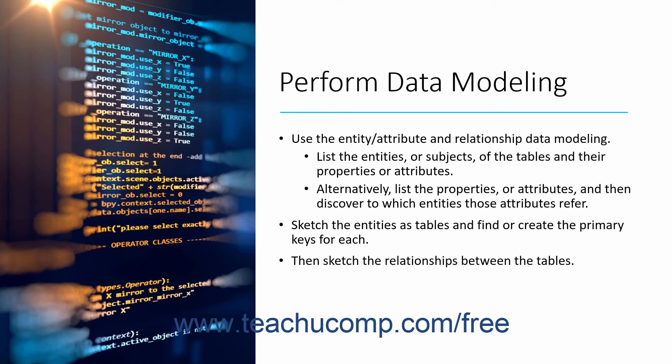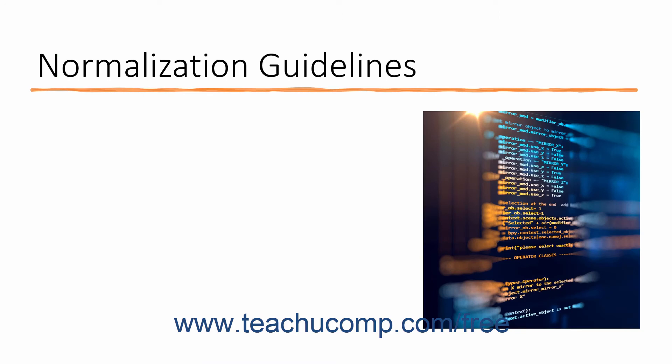Sketch relationships between the tables and list the type of relationship that the tables share. About 99% of the time this will be a one-to-many relationship. After you have a preliminary table sketch, you can then turn to Normalization Guidelines to assist you in analyzing the database structure for its relational soundness of design. These guidelines were created to assist the relational database designer in creating sound relational structures that do not break any of the foundational tenets of relational database design.